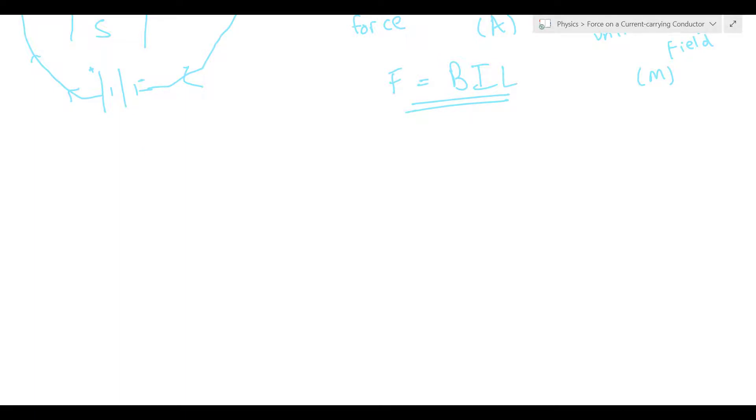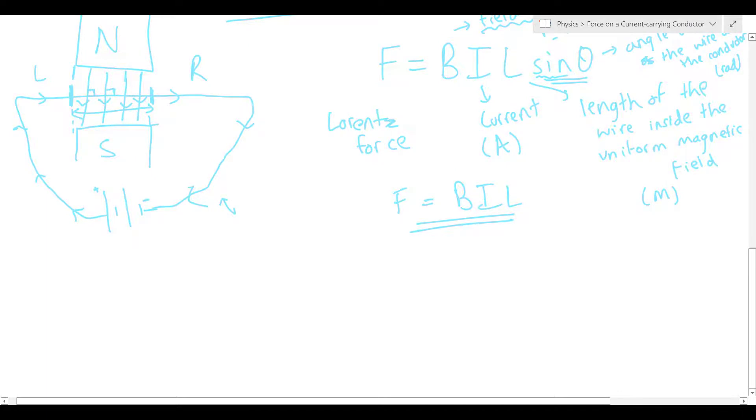Now, say I give you the values for the current and the length of the wire and the magnetic field strength in this circuit over here. You can probably determine the force. The force will be in newtons. But even if you find out the magnitude of the force in newtons, we must remember that force is a vector quantity. So what about the direction? This function, BIL sine theta, only gives us the magnitude. And here is where Fleming's left-hand rule comes in.